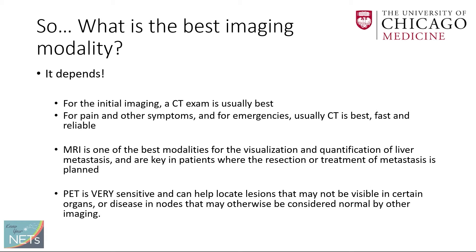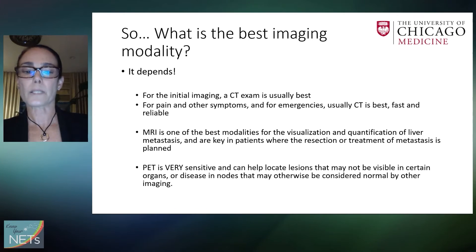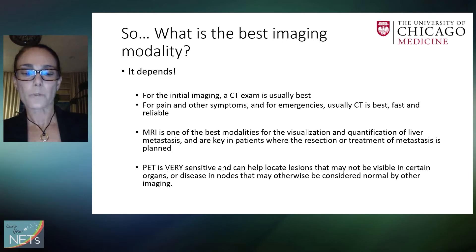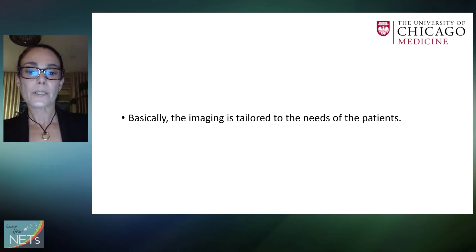What is the best imaging modality? It depends. For initial imaging when you're having pain, a CT exam is usually best because it's very fast. MRI is one of the best modalities for visualization and quantification of liver metastasis and is key whenever we're planning resection or treatment. A PET exam is very sensitive and can help locate lesions not visible in certain organs, and can detect abnormality in very small lymph nodes that look normal on CT or MR. Basically, we should tailor the images to the needs of our patients.